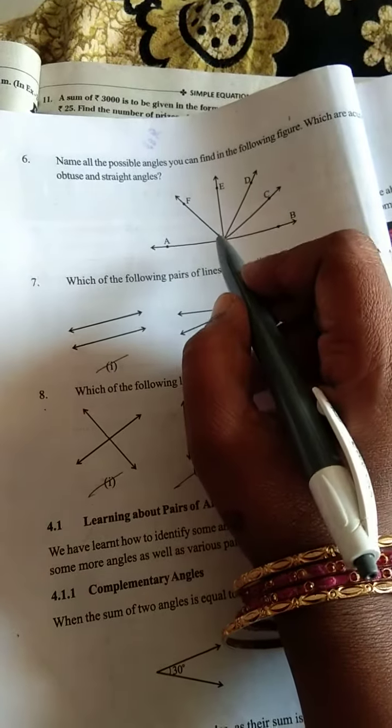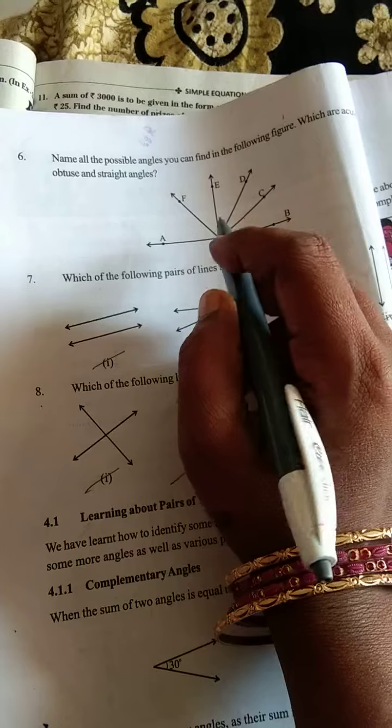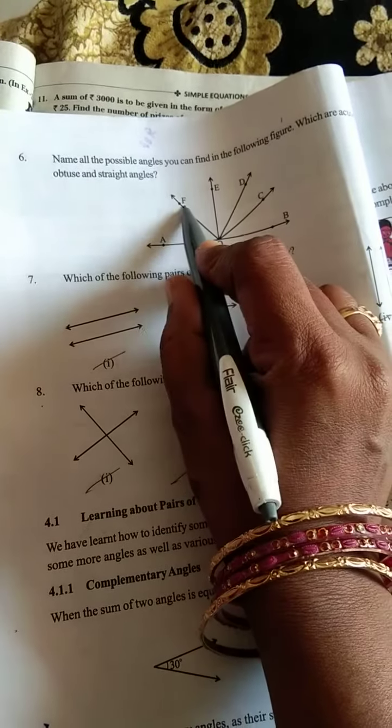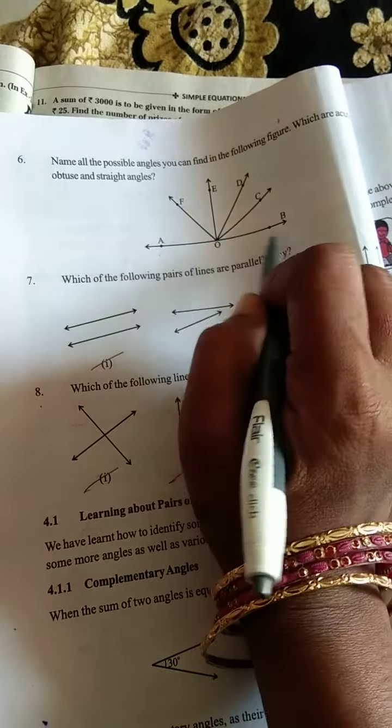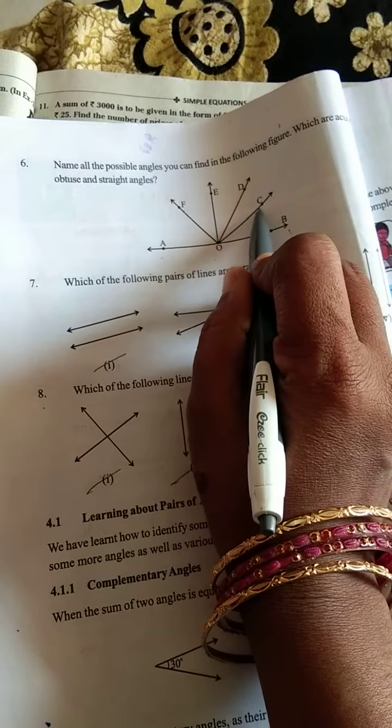Very simple this one. See here, which are acute, which are obtuse? Acute angles: A, O, F is an acute angle and B, O, C acute angle.